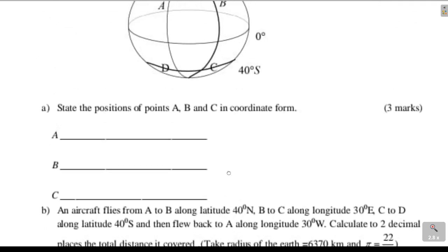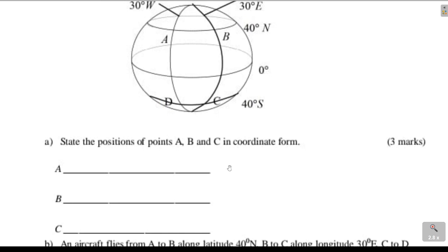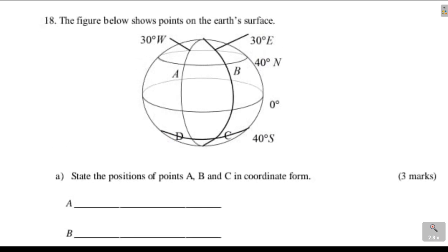So let's go to the first part. You're supposed to state the positions of A, B, and C in coordinate form. When locating these places, remember we state the latitude and then the longitude — that is how we give the positions in coordinate form.